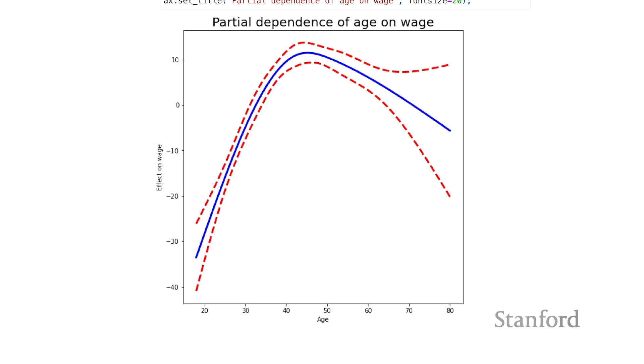So the general message here is that with standard linear models, you get a coefficient for each variable. With additive models, you get a fitted function for each variable. And here we're showing the fitted function for age, but we could show you the function for year, and we can show the set of constants for education. And so it's a nice generalization of linear models.